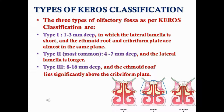Type 1 is 1 to 3 mm deep, as shown in the figure. In this type, the lateral lamella is short and the cribriform plate and the ethmoid roof are almost in the same plane.